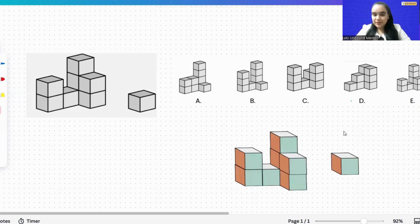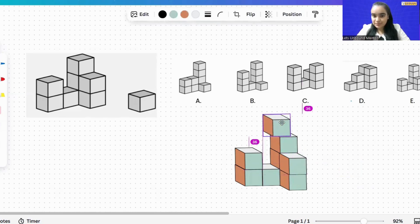But let me explain why option A, option B, option C, or option D are not correct. Let's try to make option A. In option A, what they have done is they have kept one of the blocks at the top, and along with it they have moved this block and kept it over here.